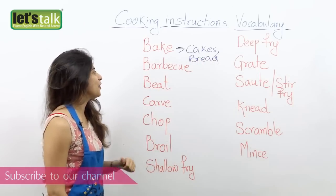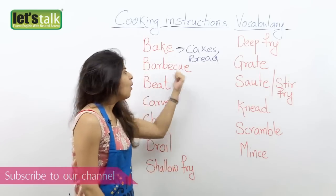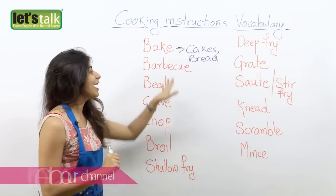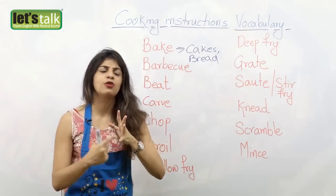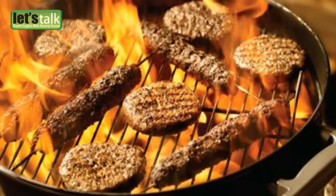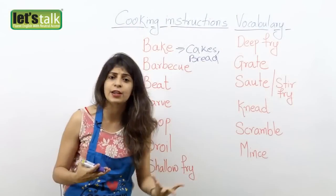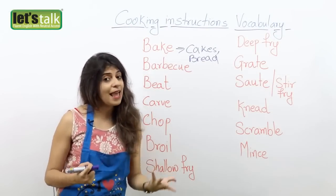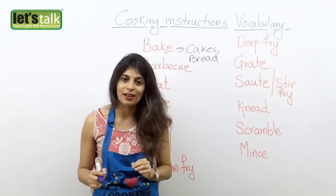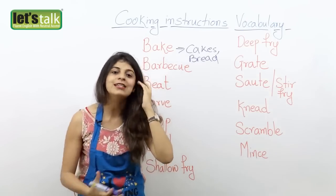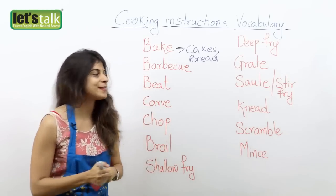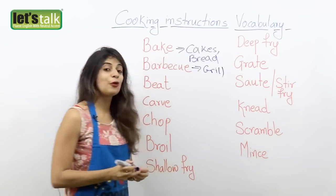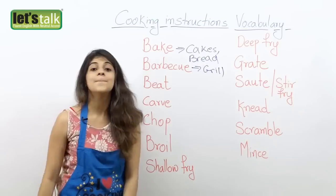Another word here for you is barbecue. Barbecue means when you grill your food. You probably grill meat foods or even veggies at times — like grilled potatoes, grilled chicken, or beefsteaks. You put it on a grill and cook it on fire or hot coals. So you grill your food, and that's what we call barbecue.